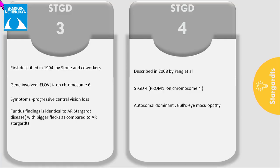Stargardt 3 and 4 are autosomal dominant. Stargardt 3 is caused by mutation in the ELOVL4 gene, which is involved in the synthesis of fatty acids. The presentation is similar to autosomal recessive Stargardt's but the flakes are often bigger. Stargardt 4 is caused by mutation in the PROM1 gene, which presents as bullseye maculopathy.